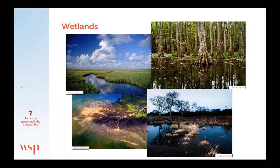Wetlands are ecosystems characterized by water or flooded areas — marshes, swamps, bogs, riparian forests, and estuaries. Flooding results in an oxygen-free environment where specific microbial processes break down nutrients and pollutants. Wetlands are like the earth's kidneys — they filter out waste and pollutants. They're one of the most biologically diverse ecosystems, supporting thousands of plants and animals.